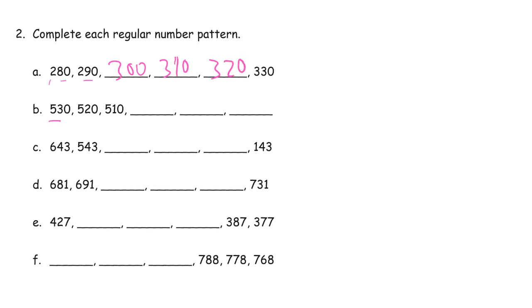And here we have getting smaller by 10s. 500, 490, 480. These are decreasing by 100 at a time. So it's 443, 343, 243. And finally, 143.